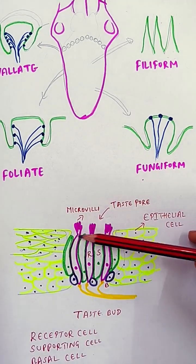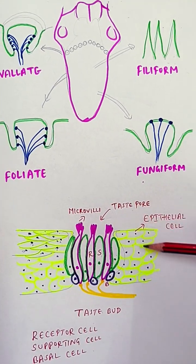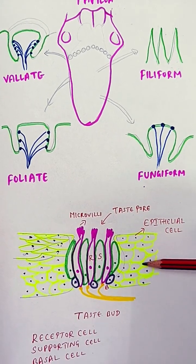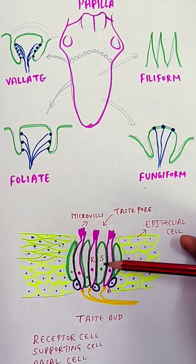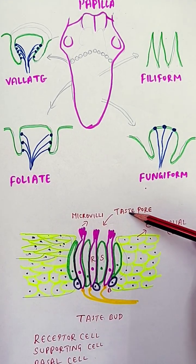This opening is called the taste pore. This is the papilla structure which is made up of epithelial cells, so in between there is one taste bud here. This opening is called the taste pore.